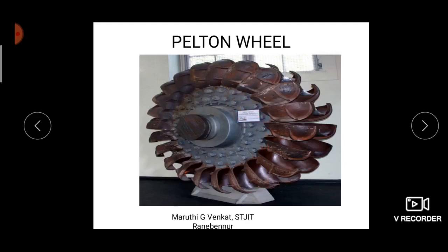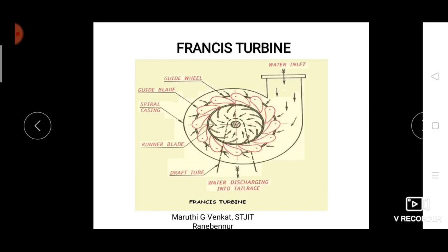Next is the Francis Turbine. Francis turbine is a reaction type of water turbine and it is a medium head reaction turbine in which the water flows radially inwards. It is mainly provided with a spiral casing, which is the outer enclosure protecting the inner parts of the turbine. It has two types of blades: guide blades connected to the guide wheel, and runner blades.